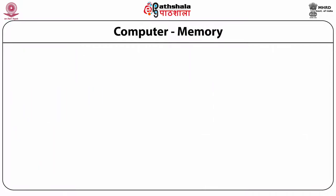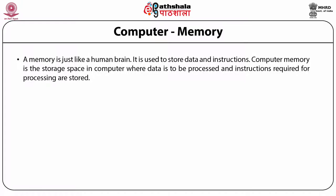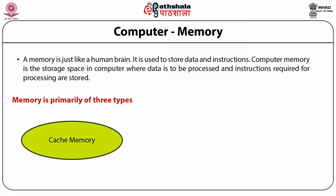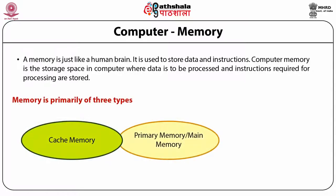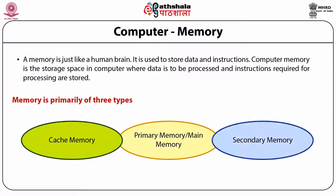Now coming to the memory. Computer memory is just like a human brain. It is used to store data and instructions. Computer memory is a storage space in the computer where data to be processed and instructions required for the processing are stored. There are three categories of memory: cache memory, primary memory or the main memory, and the secondary memory.